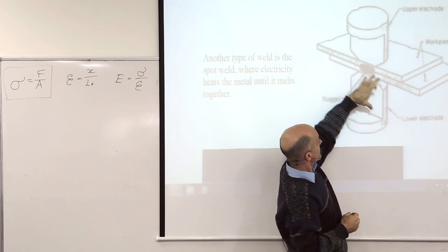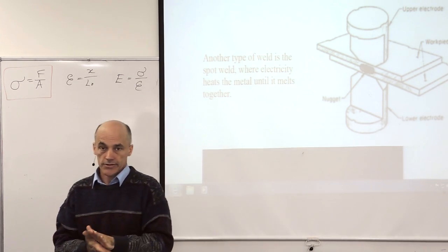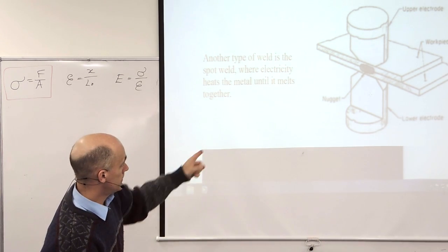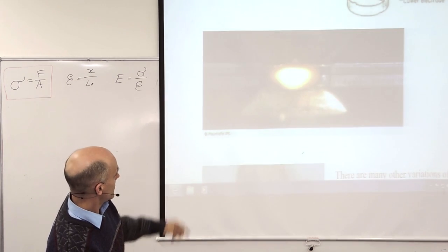So there's some limitations. For example you have a thick steel here and a thin one there. You can have trouble. And if you can't get to the other side that's also a problem. So it works really well for two pieces of sheet metal of equal thickness. There's a spot weld.